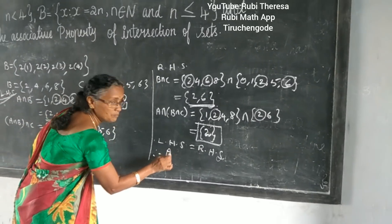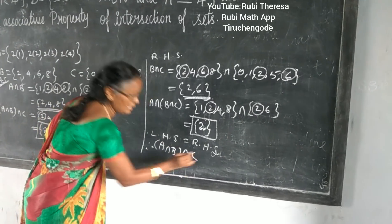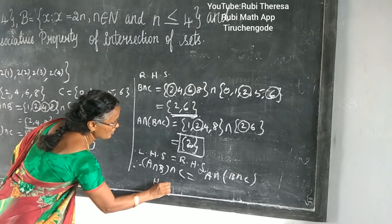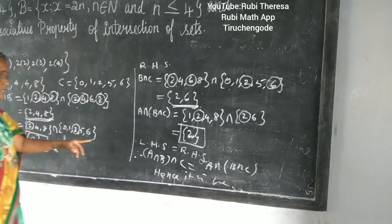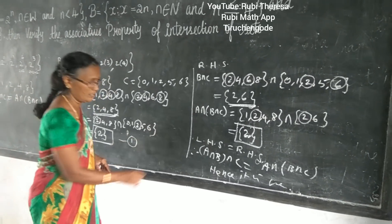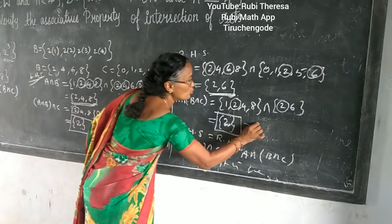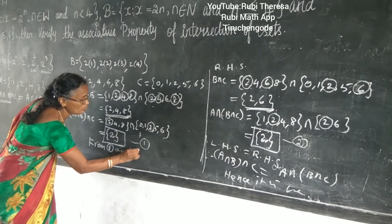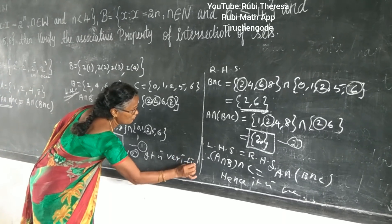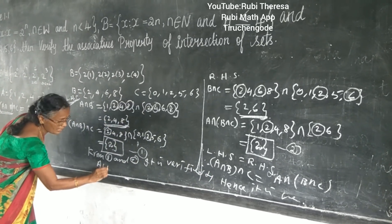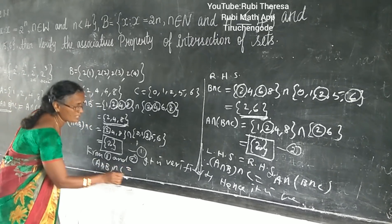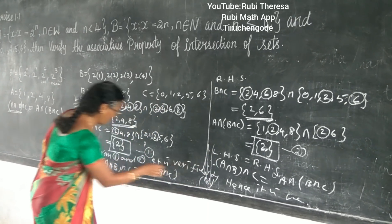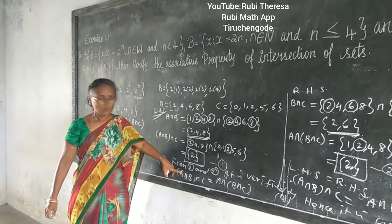Therefore, A intersection (B intersection C) equals (A intersection B) intersection C. Hence it is verified. Alternatively, you can write: from equations 1 and 2, it is verified that A intersection (B intersection C) equals (A intersection B) intersection C. Either method is acceptable — choose one.